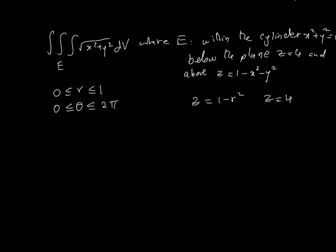And clearly z = 4 is above, bounding it above. So therefore, you have your z range goes from 1 - r² to 4. So now, the only last thing remaining is to change the x² + y² here. We're using x = r cos θ and y = r sin θ. And that's how you get the z = 1 - r² to 4.